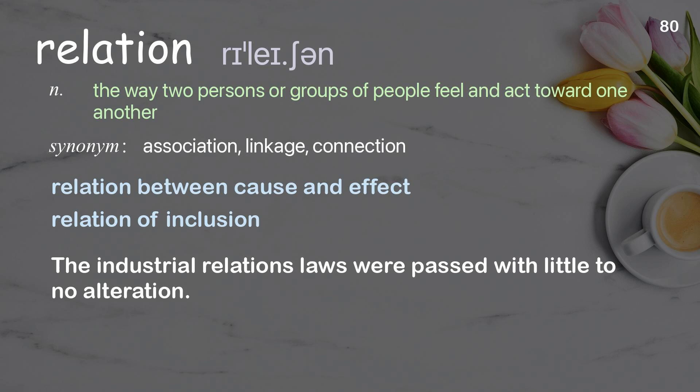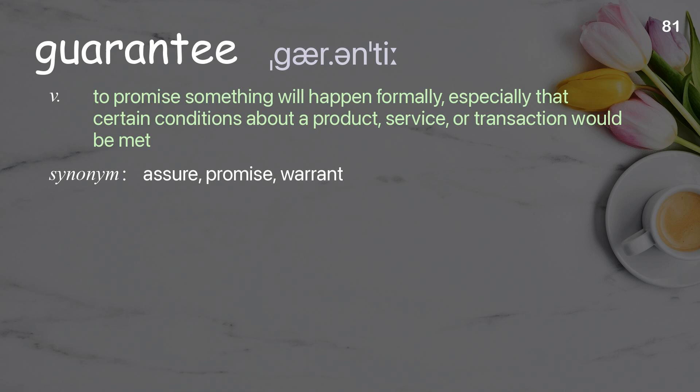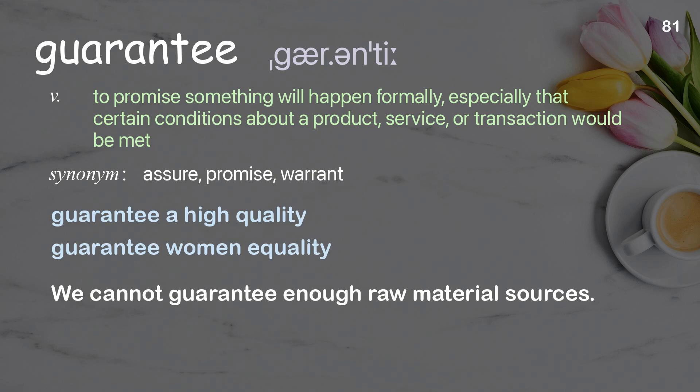Guarantee: to promise something will happen formally, especially that certain conditions about a product, service, or transaction would be met. Examples: guarantee a high quality, guarantee women equality. We cannot guarantee enough raw material sources.